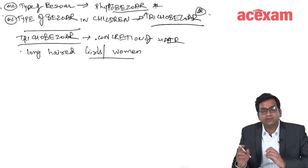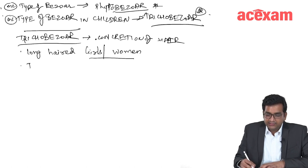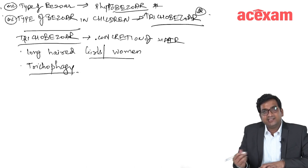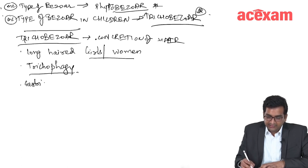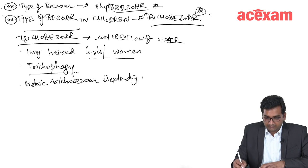It is more common in females who are having long hairs. It is associated with a psychiatric illness known as trichophagy which is eating their own hairs. And in case if the gastric trichobezoar is extending in duodenum, it is Rapunzel syndrome.